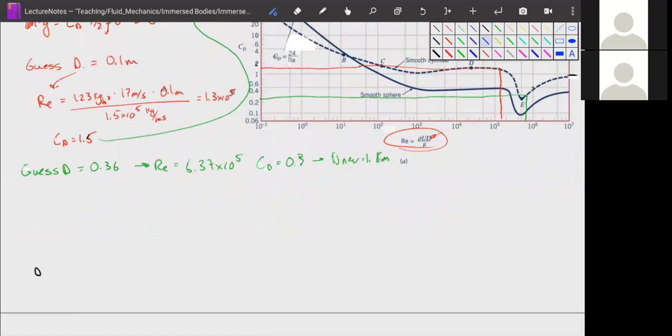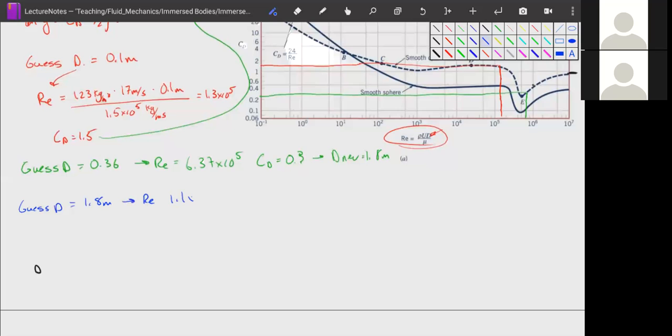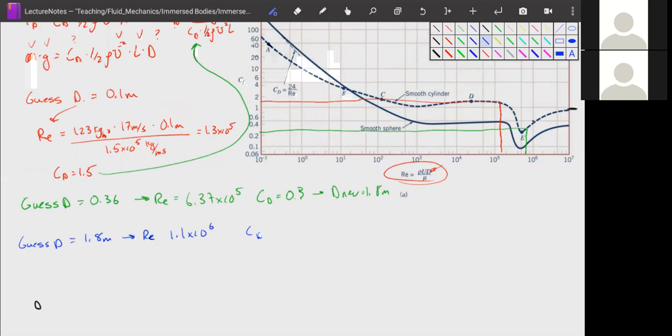So we start over again. Our guess d is equal to 1.8 meters, which gives us a new Reynolds number of 1.1 times 10 to the sixth, which gives us a drag coefficient. If we go over here, 1.1 times 10 to the sixth is roughly here. Go over, basically following this line.